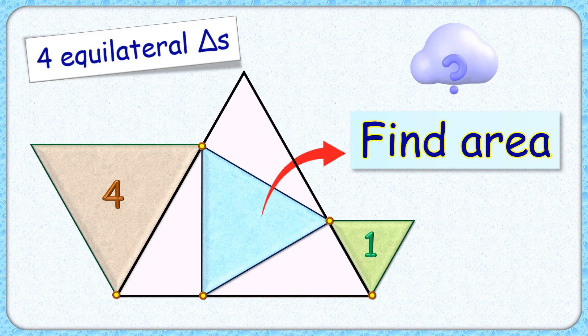Welcome everyone. This interesting question given to us has four equilateral triangles. The area of two of these equilateral triangles is given as 4 and 1 centimeter square. The exciting part is that with this limited data, we have to find the area of the blue equilateral triangle.